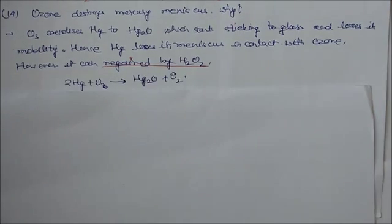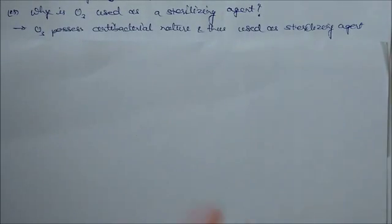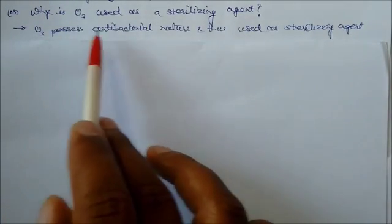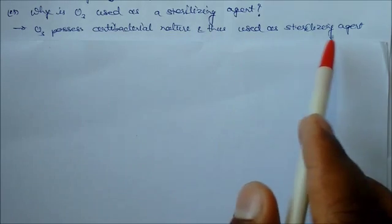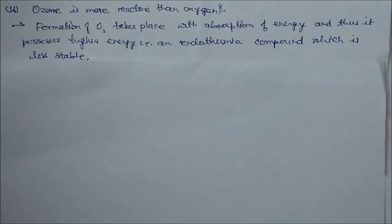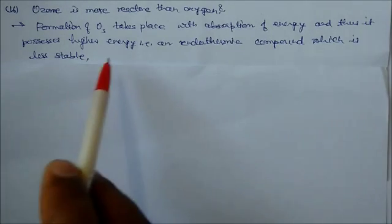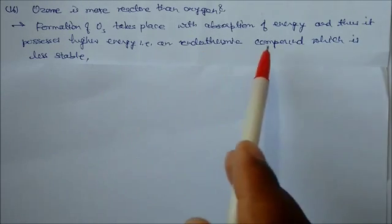Why is ozone used as a sterilizing agent? Ozone possesses antibacterial nature and thus is used as a sterilizing agent. Ozone is more reactive than oxygen. Actually, formation of ozone takes place with absorption of energy, thus it has higher energy as an endothermic compound which is less stable.